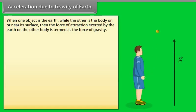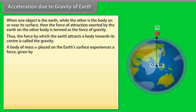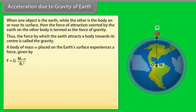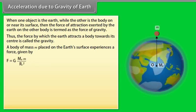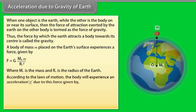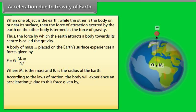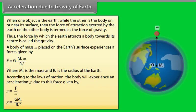Acceleration due to gravity of earth. When one object is the earth while the other is the body on or near its surface, then the force of attraction exerted by the earth on the other body is termed as the force of gravity. Thus, the force by which the earth attracts a body towards its center is called the gravity. A body of mass m placed on the earth's surface experiences a force given by F is equal to G into m e m upon r e square, where m is the mass and r e is the radius of the earth. According to the laws of motion, the body will experience an acceleration g due to this force given by G is equal to G into m e divided by r e square.